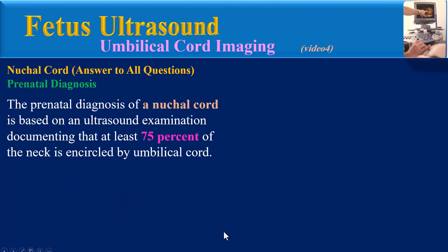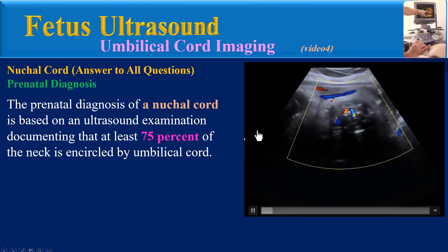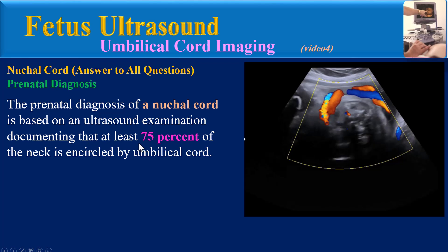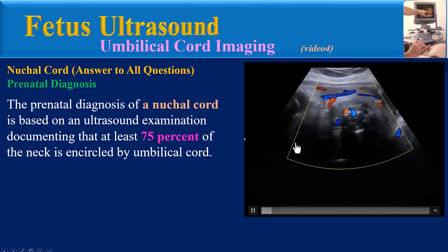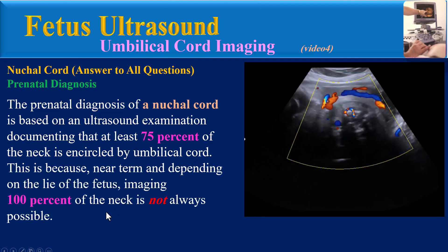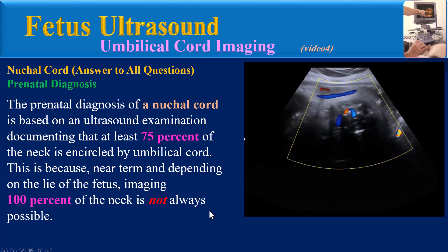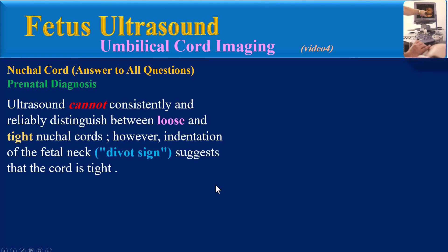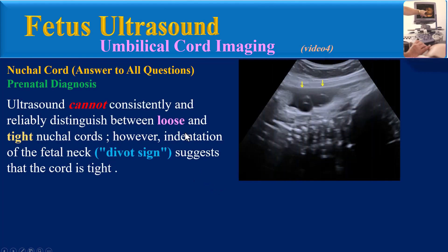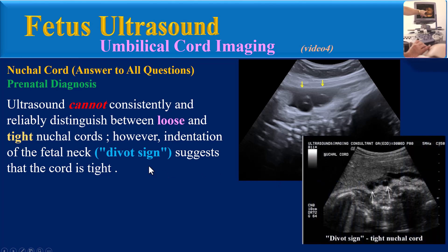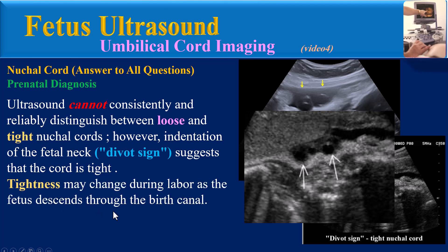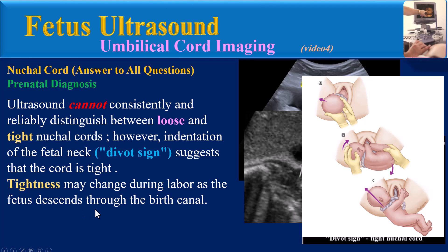Prenatal diagnosis: The prenatal diagnosis of a nuchal cord is based on ultrasound examination documenting that at least 75 percent of the neck is encircled by umbilical cord. This is because near term, depending on the lie of the fetus, imaging 100 percent of the neck is not always possible. Ultrasound cannot consistently and reliably distinguish between loose and tight nuchal cords. However, indentation of the fetal neck — the famous 'divot sign' — suggests that the cord is tight. Tightness may change during labor as the fetus descends through the birth canal.